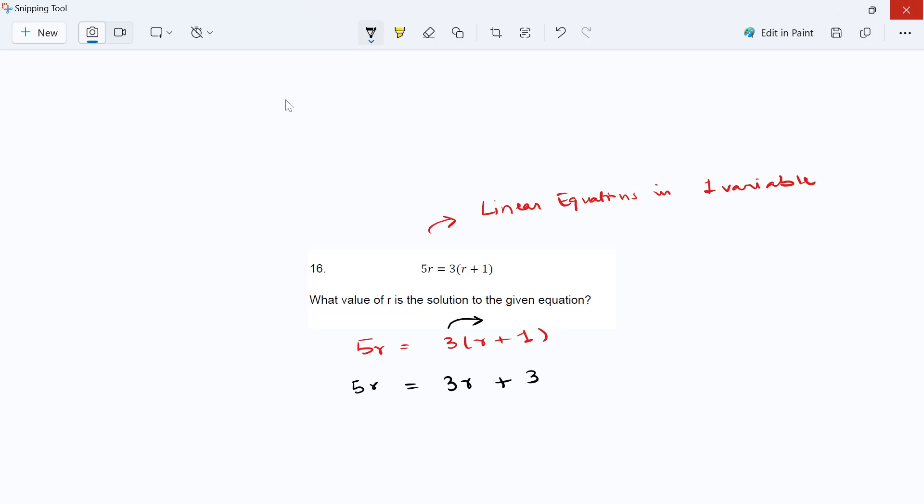Now we'll bring the variable terms on one side of the equation. I'm going to subtract 3r, so you get 5r - 3r = 3. 5r - 3r is 2r, so 2r = 3.